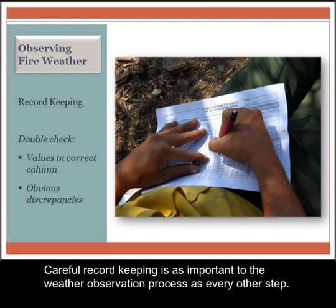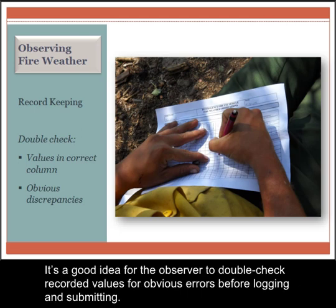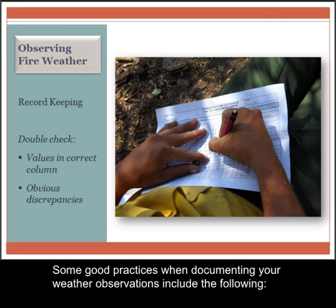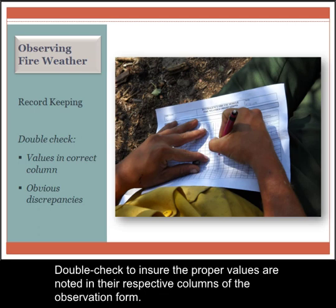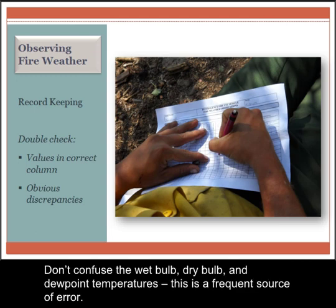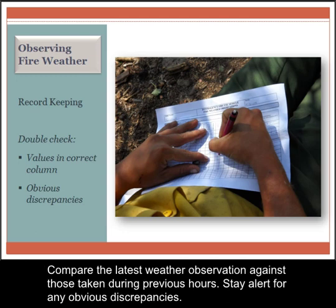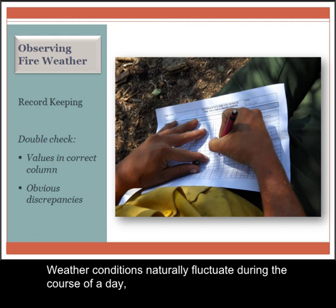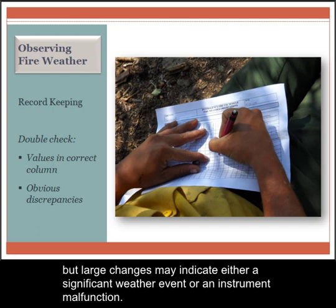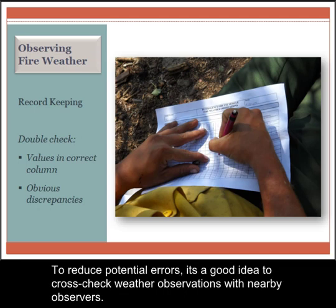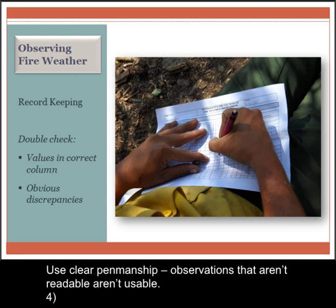Careful record keeping is as important to the weather observation process as every other step. It is a good idea for the observer to double check recorded values for obvious errors before logging and submitting. Some good practices when documenting your weather observations include the following. Double check to ensure the proper values are noted in their respective columns of the observation form. Don't confuse the wet bulb, dry bulb, and dew point temperatures — this is a frequent source of error. Compare the latest weather observation against those taken during previous hours and stay alert for any obvious discrepancies.